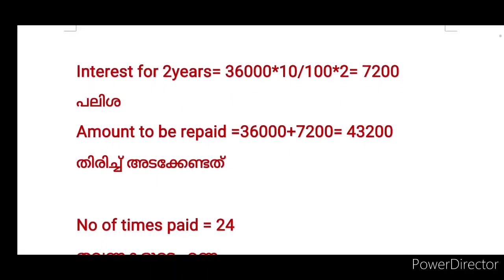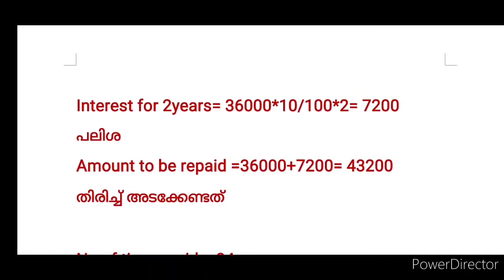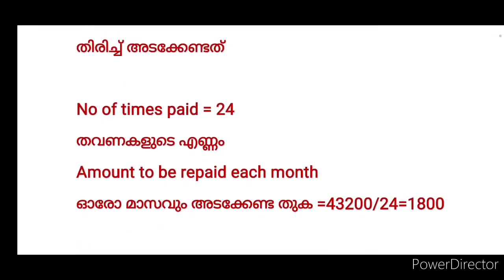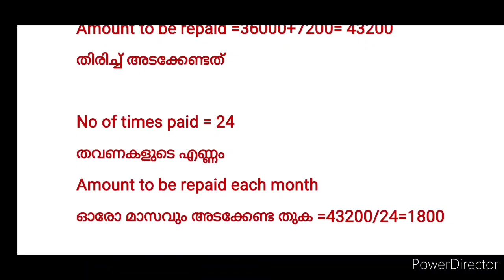It is 7,200. It is $36,000 plus $7,000, which is $43,000. What we need is $25,000. The number of times paid is $24,000. $23,000 becomes $24,000.